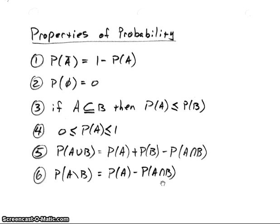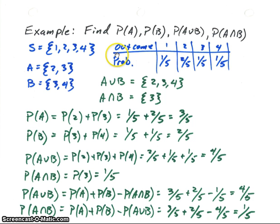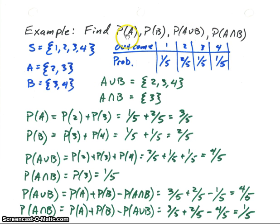We'll see examples of these in a few minutes. In the first example, we're going to find the probability of A, the probability of B, the probability of A union B, and the probability of A intersect B. The sample space is {1, 2, 3, 4} with probabilities: P(1) = 1/5, P(2) = 2/5, P(3) = 1/5, P(4) = 1/5. Event A = {2, 3} and event B = {3, 4}. So A union B = {2, 3, 4} and A intersect B = {3}.